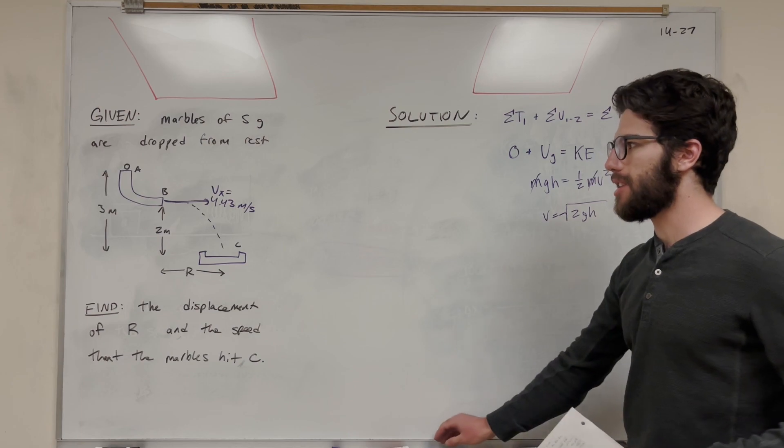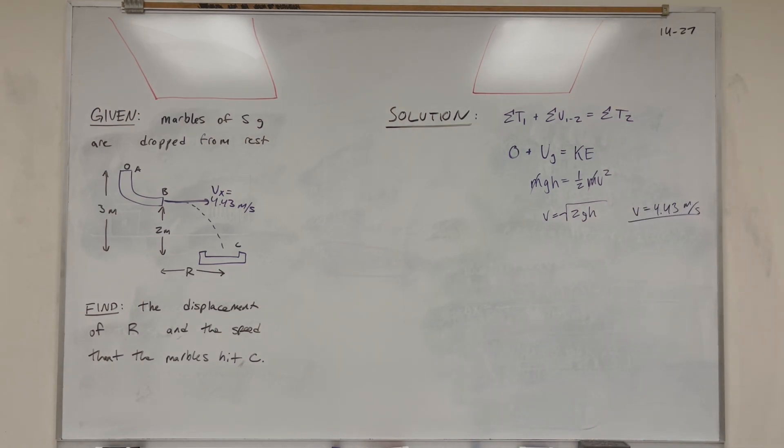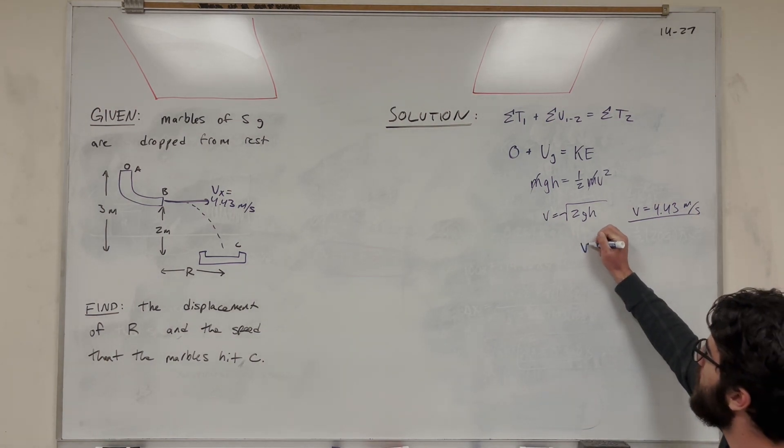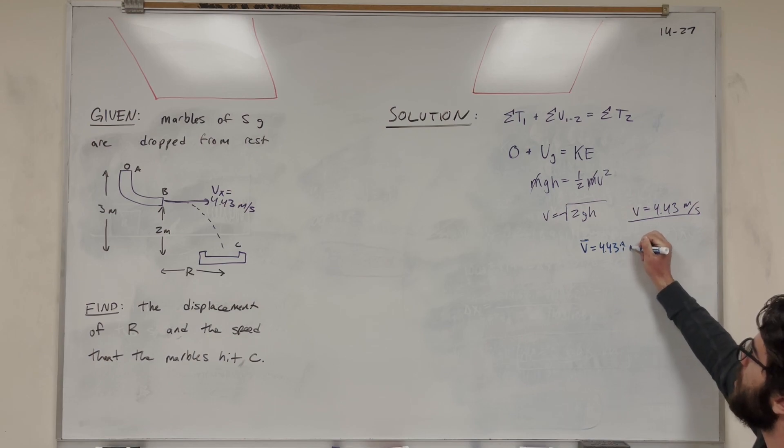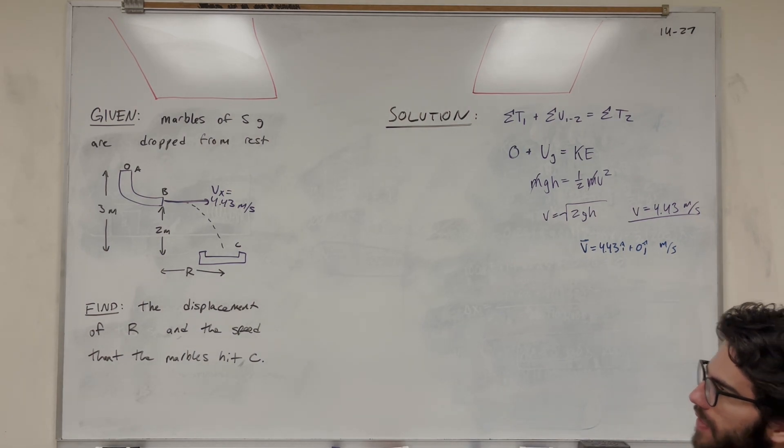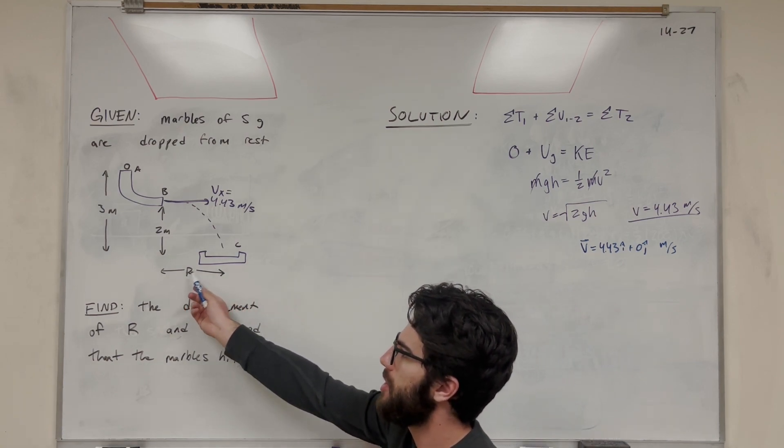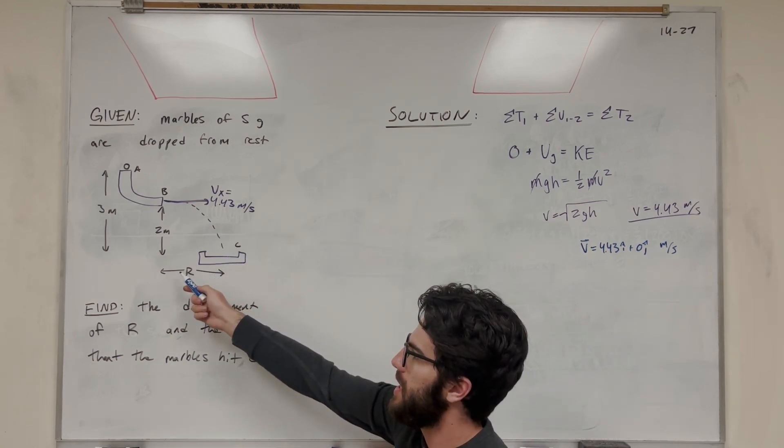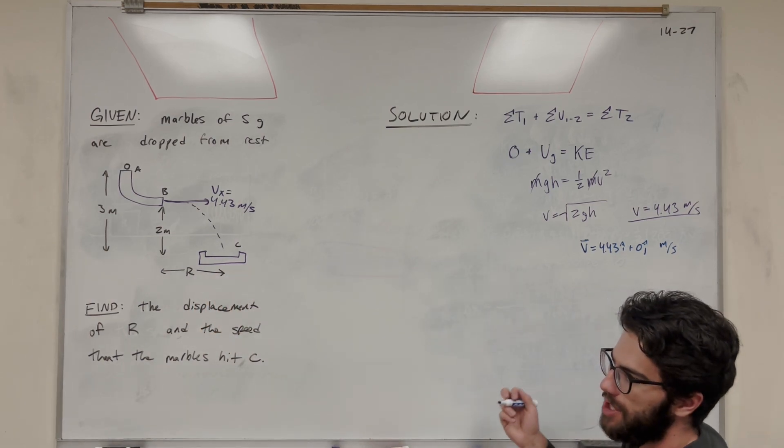So now we just have a kinematics problem to solve. We're trying to find distance R. If we want to write this as a vector, obviously it's going to be 4.43i plus 0j right now - there's no velocity in the y direction. So how are we going to start this? Let's start with finding the time it takes to hit the ground. Usually when you have this kinematics problem and you want to find how far it travels, you're going to want to find how long it takes to hit the ground.